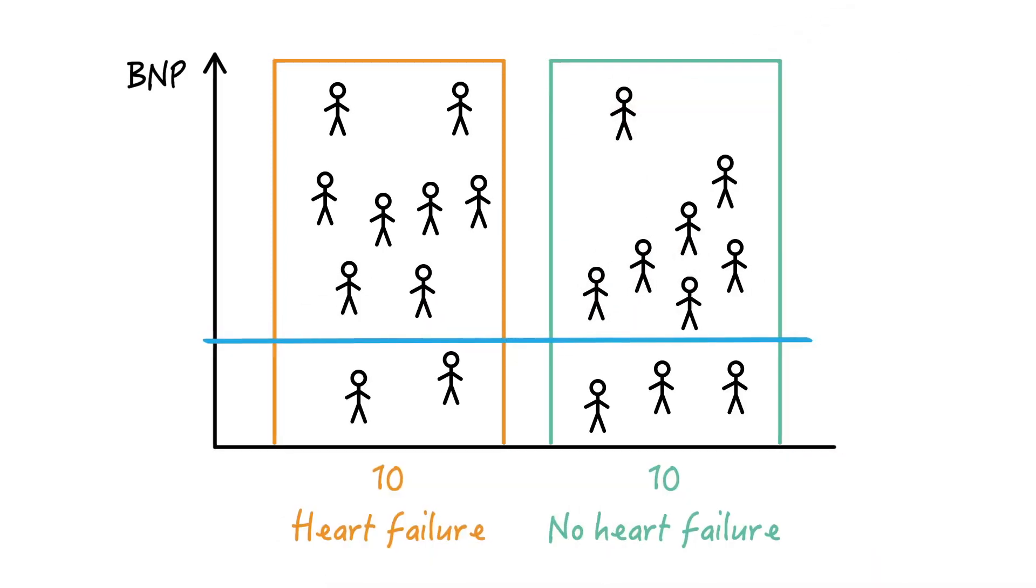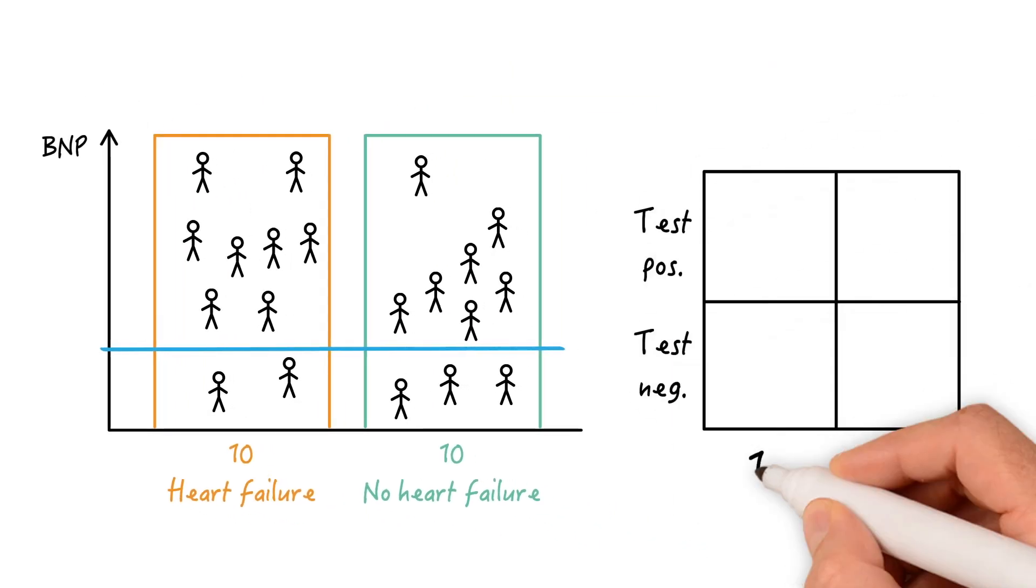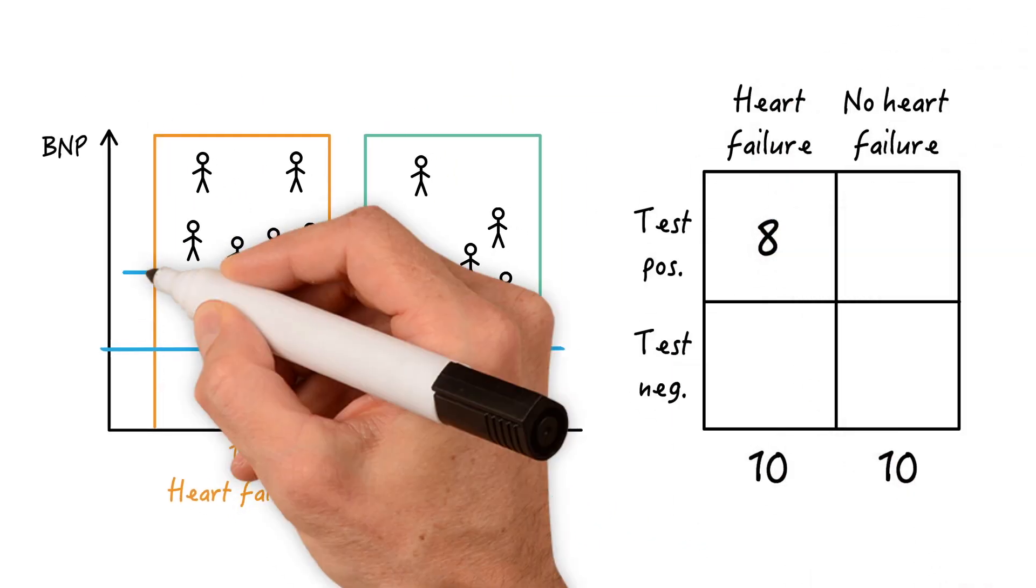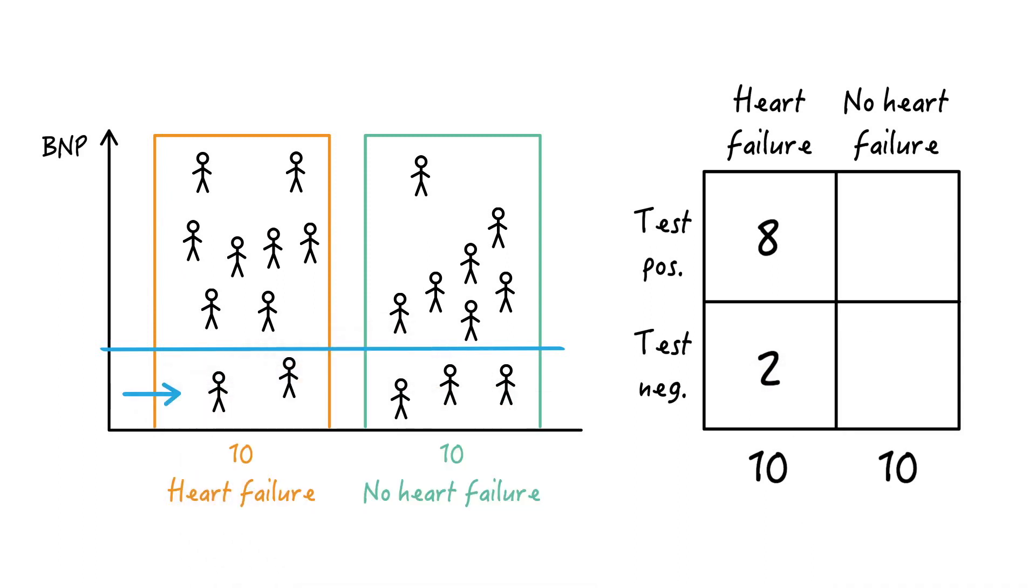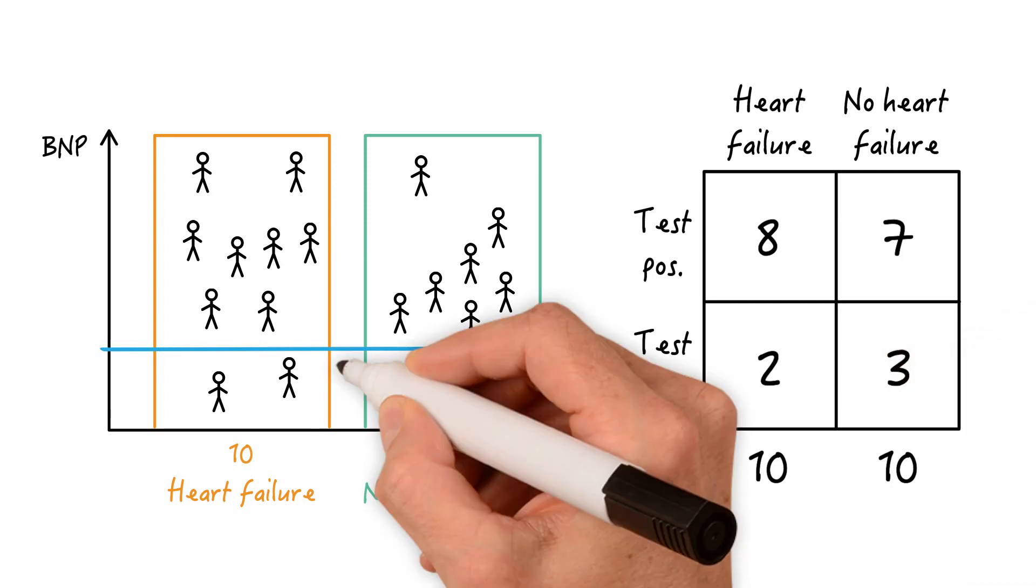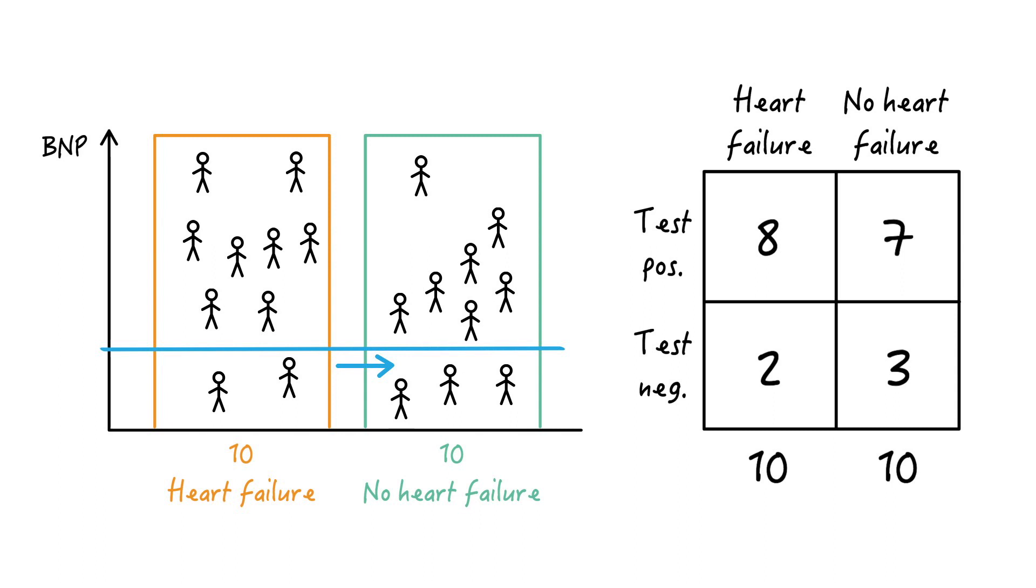If we set our threshold at a lower level we'd correctly classify 8 out of the 10 diseased, and 2 would be falsely classified as healthy. However, 7 out of the 10 healthy controls would be falsely classified as diseased, whereas 3 would be correctly classified as non-diseased.